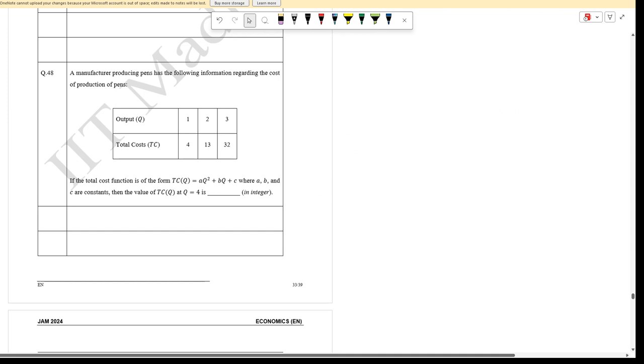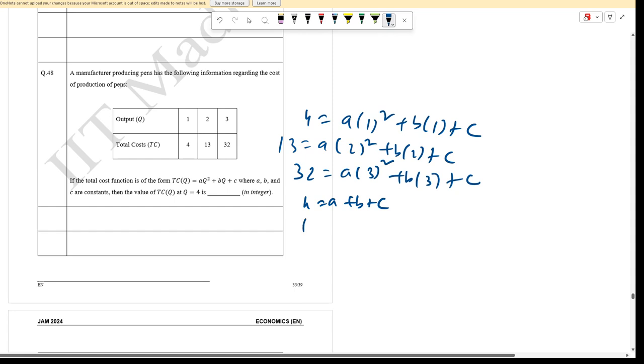Next question: Total cost TC is given at data points: Q=1, TC=4; Q=2, TC=13; Q=3, TC=32. We can set up a system of equations at these data points. 4 equals a times 1 squared plus b times 1 plus c. 13 equals a times 4 plus 2b plus c. 32 equals 9a plus 3b plus c.